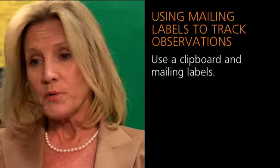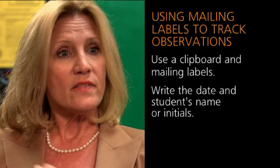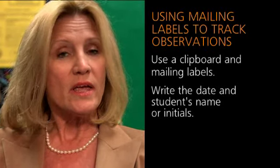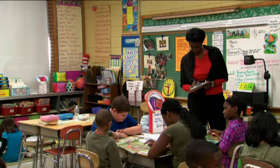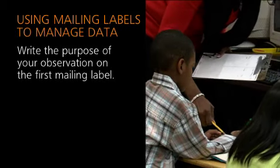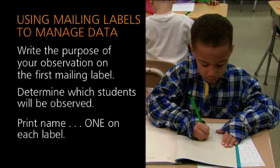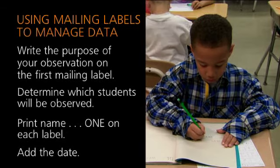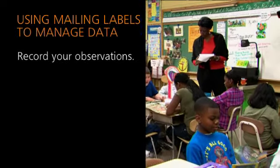There's an easy way to chart these observations when we're working with students, especially in small group. You just keep a clipboard with mailing labels and you put the date of your observation and the student's name or initials on the label and you just make a positively stated comment about what you see. Write the purpose of your observation on the first mailing label. That will keep you focused and tell you what to look for that day. Then determine which students will be observed and print their name, one on each label, and then add the date of your observation.